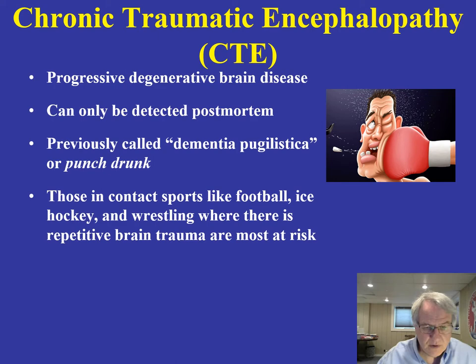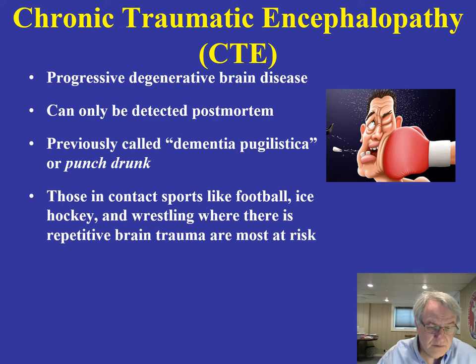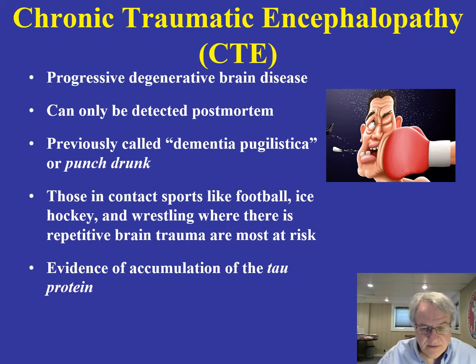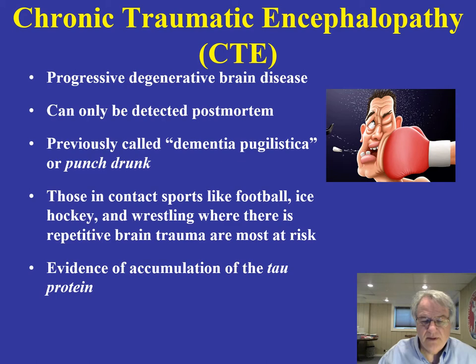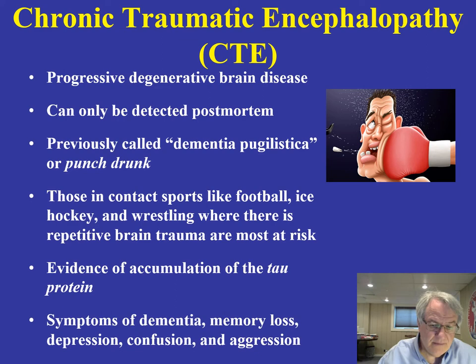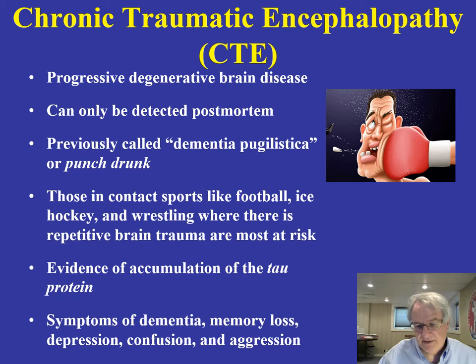Contact sports — especially football, ice hockey, and wrestling — anything involving repetitive brain trauma can be particularly devastating to individuals participating in those athletic contests. One of the things we know is there's an accumulation in certain key brain areas of the tau protein, which is an abnormal protein associated with concussion. Behavioral symptoms include dementia, memory problems, depression, mood swings, confusion, and aggressive behavior — all things associated with CTE.